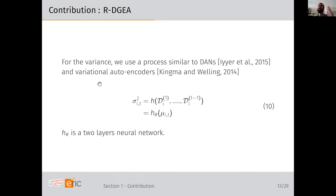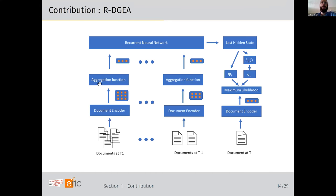For the variance, we use a process similar to deep Gaussian networks, mapping the author mean to a measure of variance. This works best in practice and has intuition similar to a variational autoencoder: some regions of the space are associated with higher variance, for example documents lying between topical clusters. The full functional model encodes documents, builds and aggregates matrices, passes them through an RNN to get mean and variance, and optimizes via maximum likelihood jointly with the document encoder.